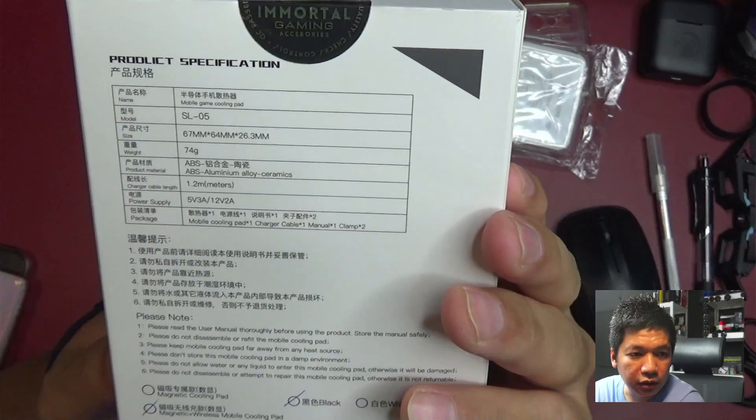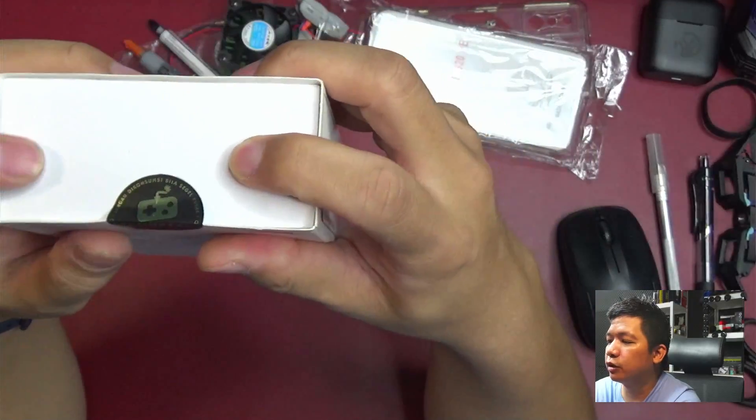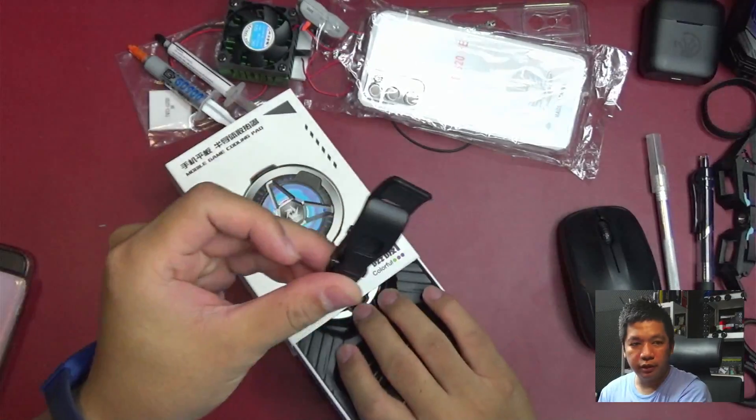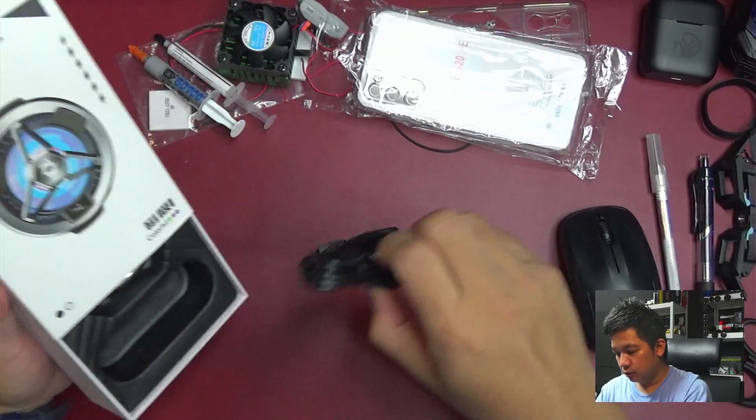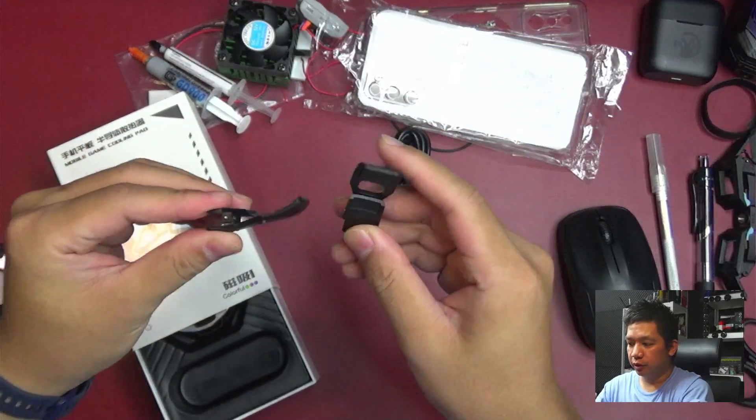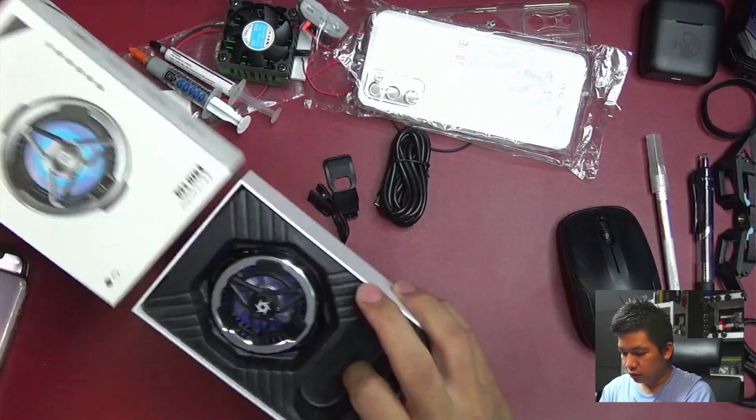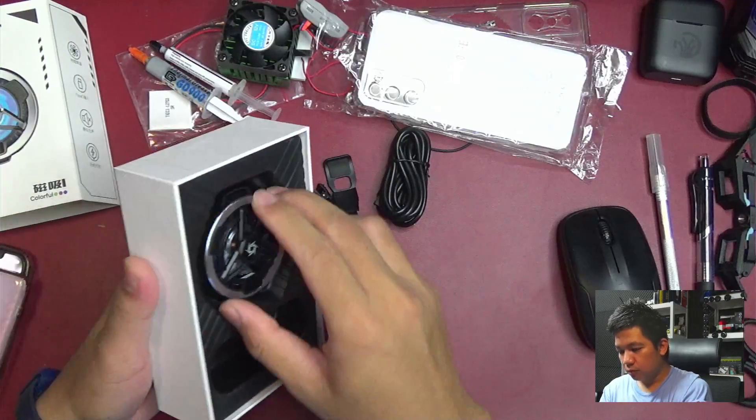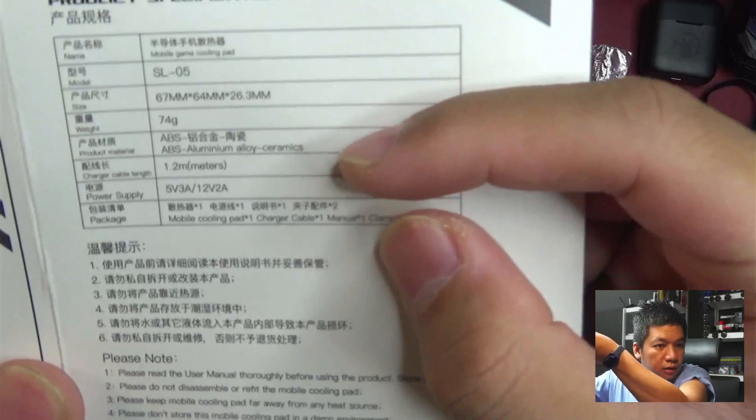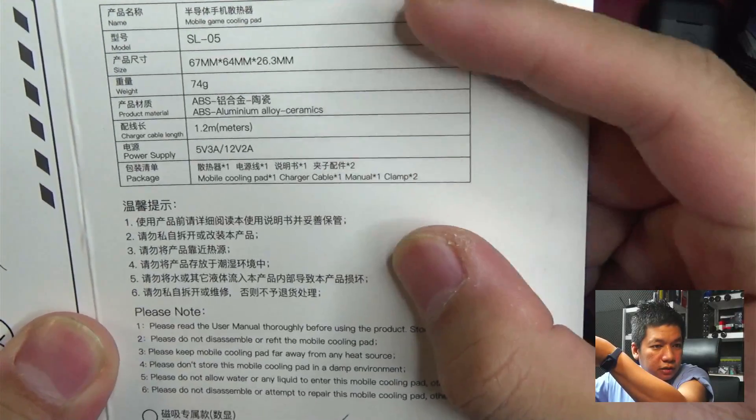Ini SL05 ya. Kemarin ngeliat produknya SL, cool quality-nya lumayan-lumayan. Nggak ada jepitannya. Nih jatuh satu. Oh, jepitannya dua. Ada dua jepitan. Sistemnya lucu juga. Ini di Immortal ya. Kita unboxing aja ya, tes tipis-tipis.